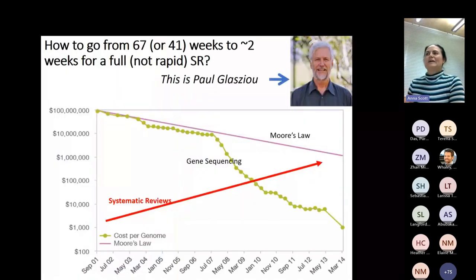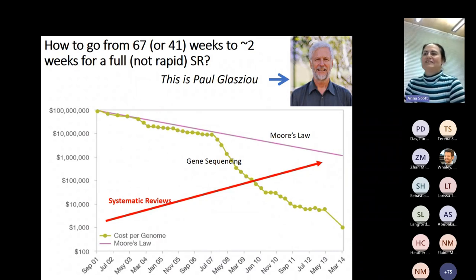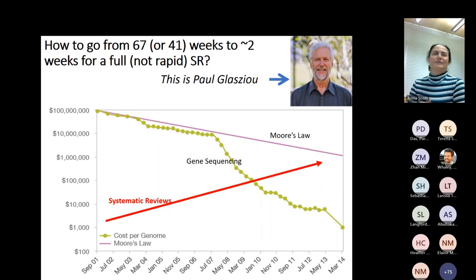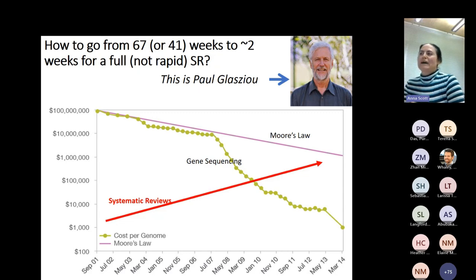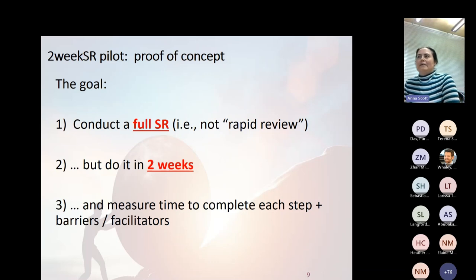Going back in time: the person pictured in the upper right is Paul Glasziou. I used to work with Paul at Bond University in Gold Coast, Australia. From the time I showed up in mid-2016, I saw Paul give a slide and say something like this many times: computing power is getting cheaper and faster; genome sequencing is getting cheaper and faster. But why not systematic reviews? Why aren't we doing systematic reviews in two weeks yet?